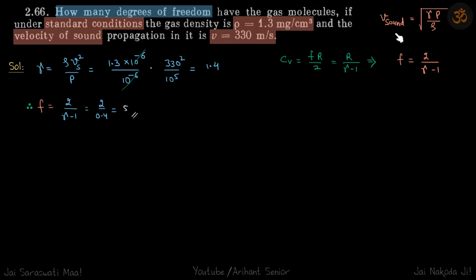This formula: velocity of sound is root gamma P by rho, or you might have remembered it as root gamma RT by M. If you simplify root gamma RT by M, you will get root gamma P by rho.